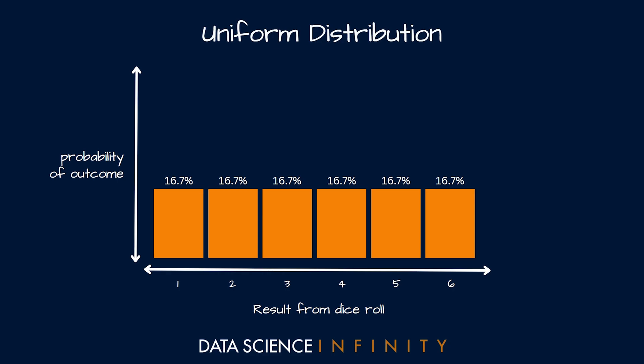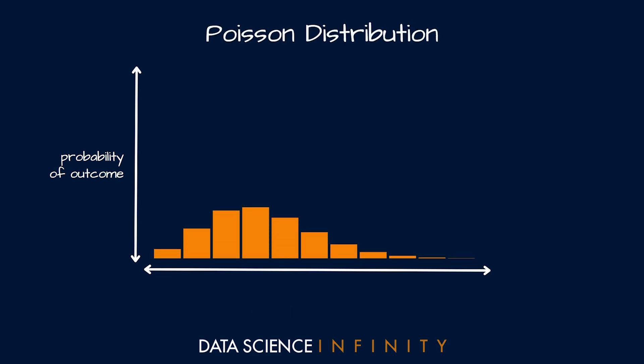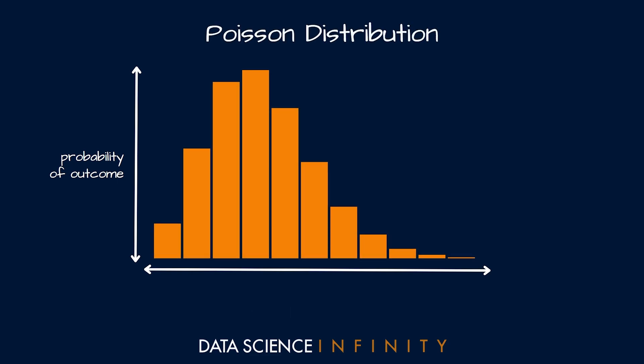Now finally, the last distribution that we are going to cover is an extremely interesting one, and that is the Poisson distribution. Now the thing that probably stands out about what you are seeing here and what makes it different from the distributions that we have discussed so far is that this distribution is not symmetrical. This is actually because the Poisson distribution is bounded between zero and infinity. While this might sound a little bit strange, it's actually very useful. The Poisson distribution describes the number of events or outcomes that occur during some fixed interval, most commonly a time interval.